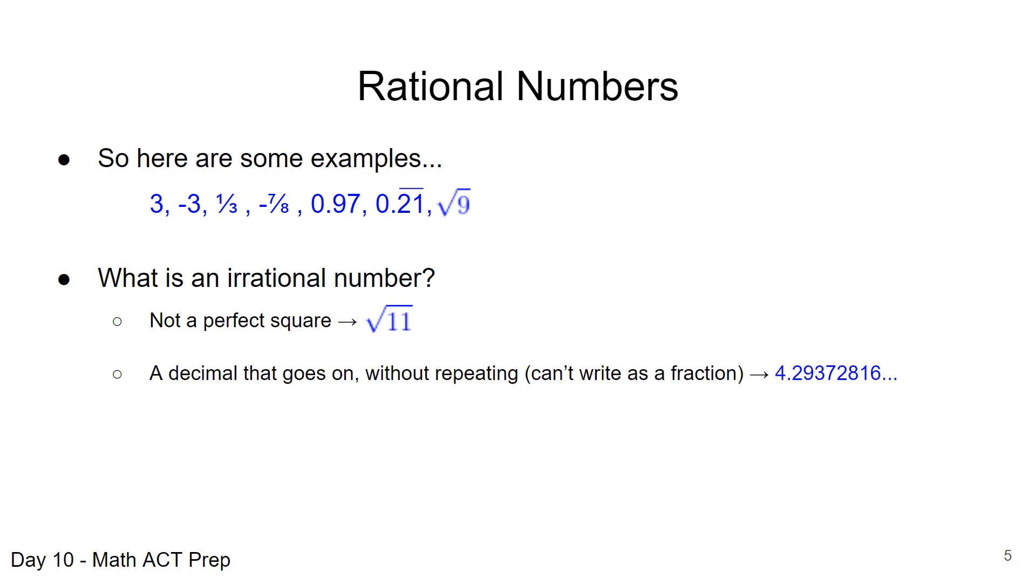The decimal goes on without repeating; we cannot write this as a fraction. Another prime example of an irrational number is pi—that is 3.14159, it goes on and on and on without repeating. Pi is a perfect example of an irrational number you can keep in mind.